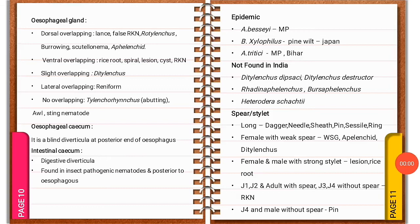Regarding epidemic information: BCA is epidemic in Madhya Pradesh, and Bursaphelenchus xylophilus is epidemic in Japan causing pine wilt disease. Anguina tritici is found in Madhya Pradesh and Bihar. Nematodes not found in India are Ditylenchus dipsaci, Ditylenchus destructor, Radopholus similis, Bursaphelenchus, Heterodera cacti — this is very important for the exam.